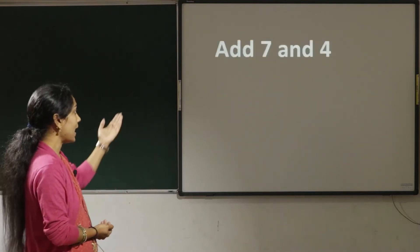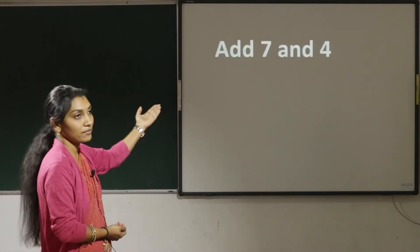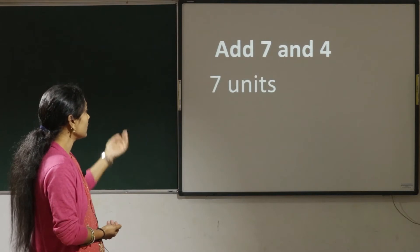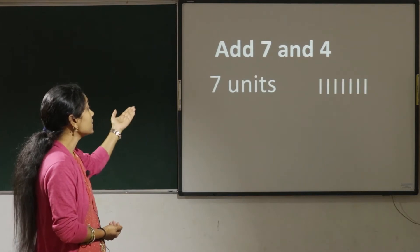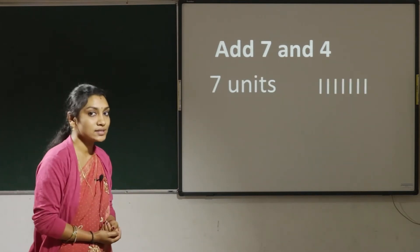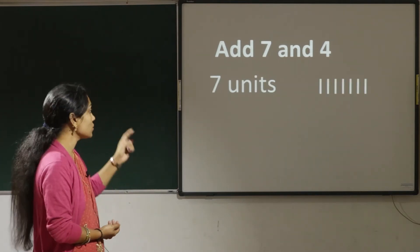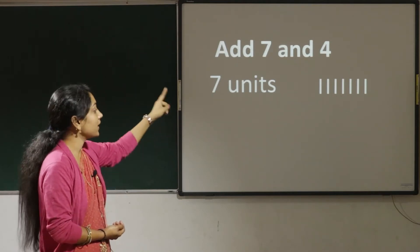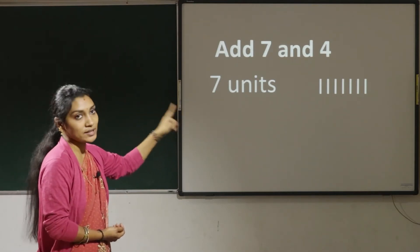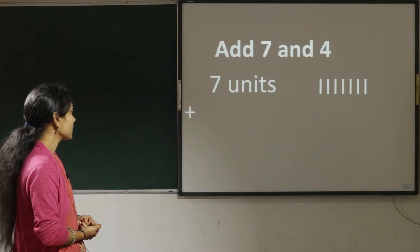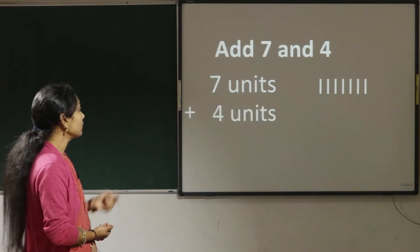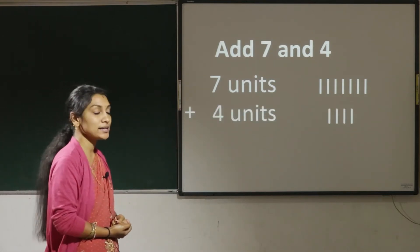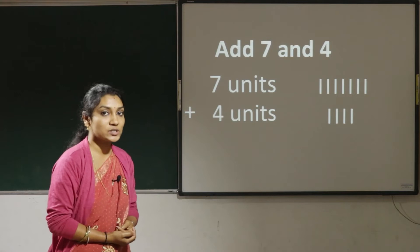Now let us add 7 and 4. Here we have 7 — 7 is a single digit number, so it is 7 units. There are 7 sticks there. Let us add 4 units to that. That is 7 plus 4. How much, children?